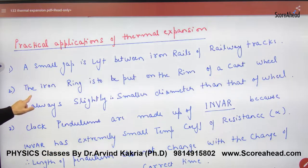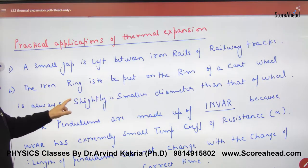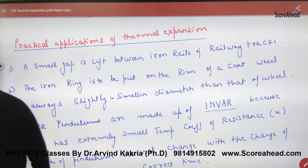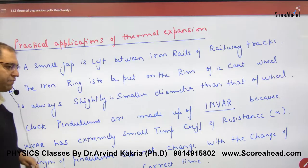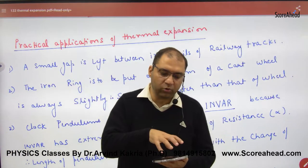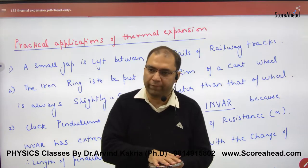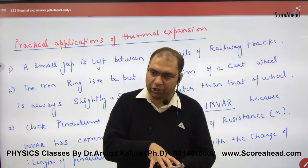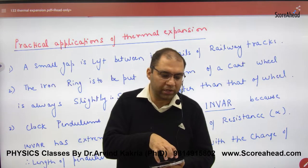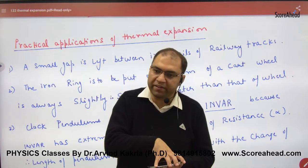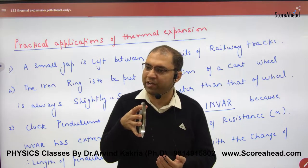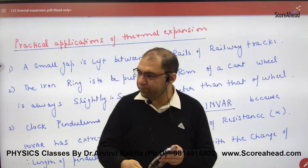An iron ring to be put on the rim of a cart wheel is always made with a smaller diameter than the wheel. If I have to put a ring on a wheel, the radius of the ring is kept small so it will be tight. Why? Because if it is small, we heat the ring — when heated, it expands. We place it on the wheel, and when it cools, it contracts and becomes tight. So this is an application of thermal expansion.